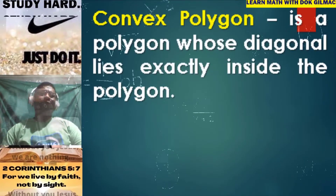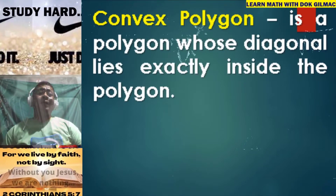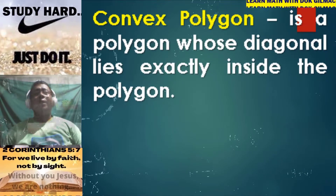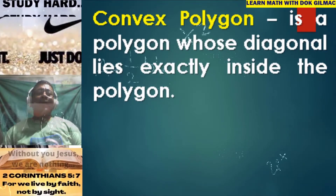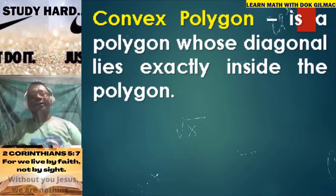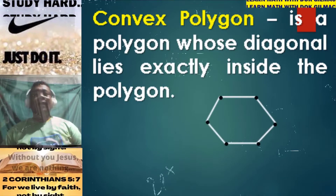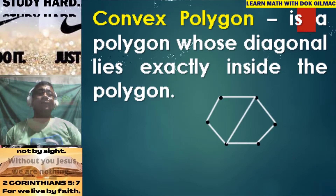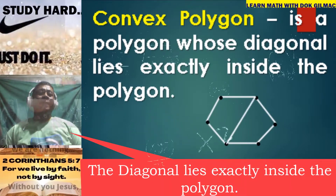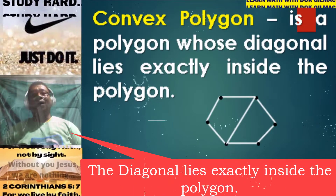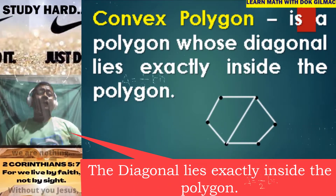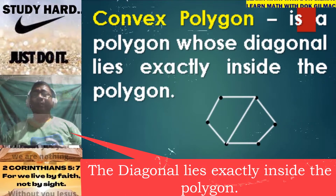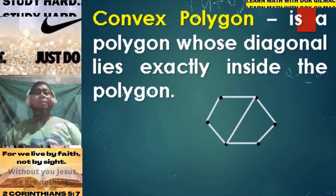There are two types of polygons. The first one is what we call a convex polygon. A convex polygon is a polygon whose diagonals lie exactly inside the polygon. For instance, we have here a polygon where all of the diagonals lie exactly inside the polygon. So this is what we call a convex polygon.